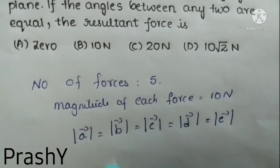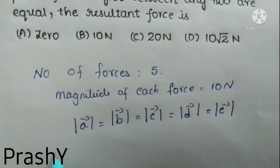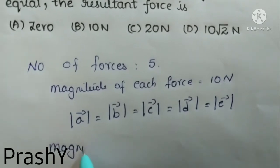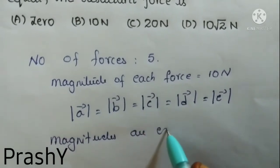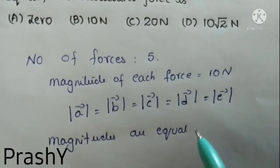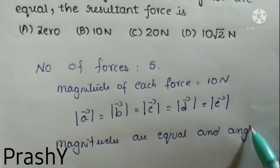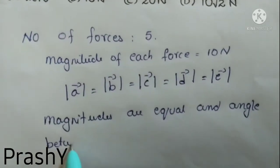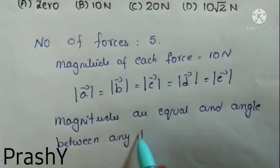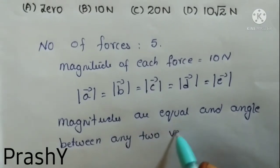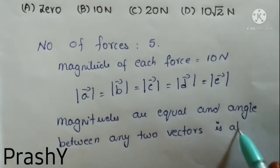So here magnitudes are equal, which means the angle between any two vectors is also equal. This is the condition given.